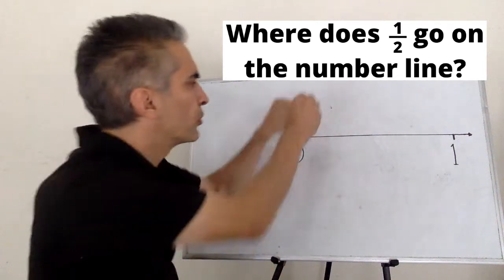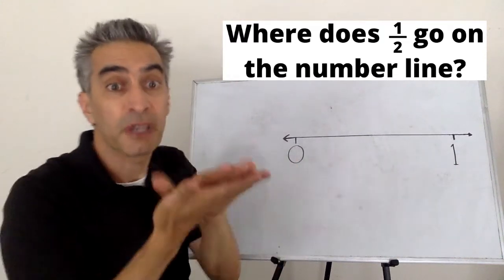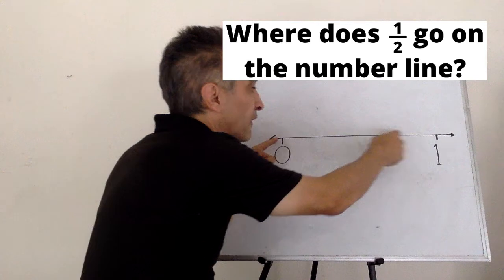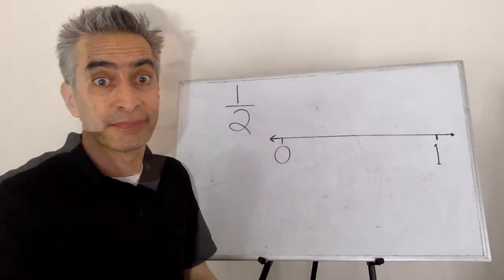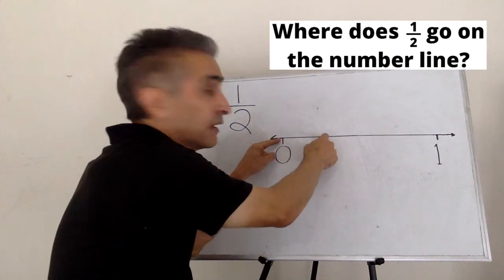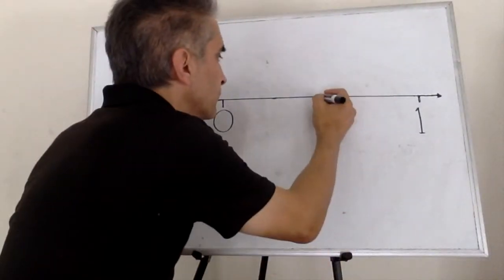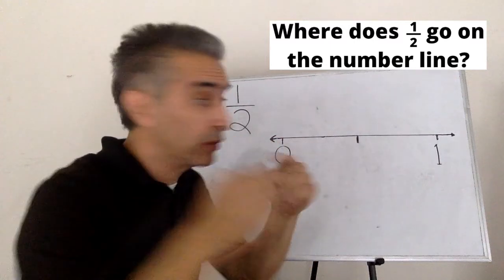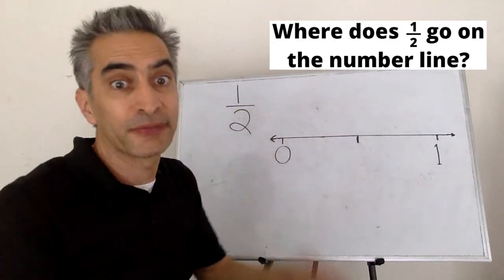Our example problem is: where does one-half go on the number line? We're going to change this zero and this one into fractions. This two means we're going to take this line and split it into two equal parts. Does this line right here equal this other line right here? No. Does this line right here equal this line right here? Yes. Two equal parts.